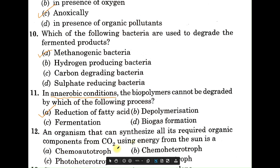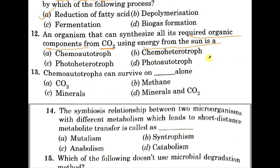Question number twelve: an organism that can synthesize all its required organic compounds from carbon dioxide using energy from the sun is — A: chemo autotroph, B: chemo heterotroph, C: photo heterotroph, D: photo autotroph. Since light energy is used, it must be 'photo,' and since it synthesizes its own organic compounds, it is 'autotroph.' The correct answer is D, photo autotroph.